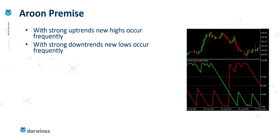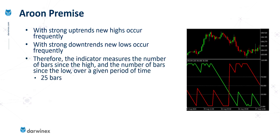The underlying premise behind this indicator is that in strong uptrends, we see new highs occurring very frequently as the price action continually extends the previous highs. Conversely, in a downtrend, we see a lot of new lows occurring very frequently. The indicator measures the number of bars since the last high and the number of bars since the last low, and it does this over a given period — the default for the Aroon is 25 bars.